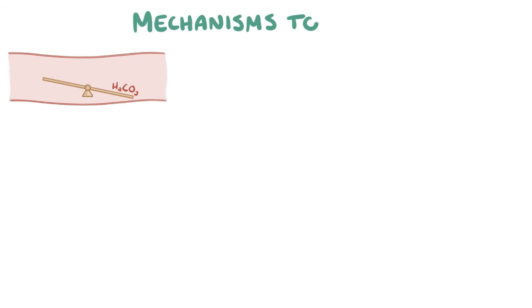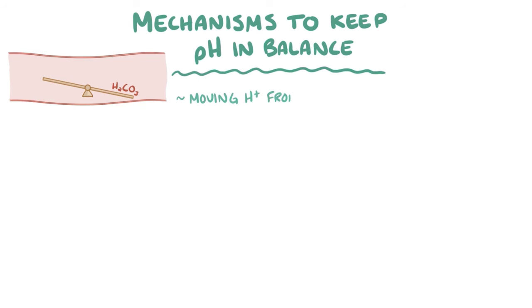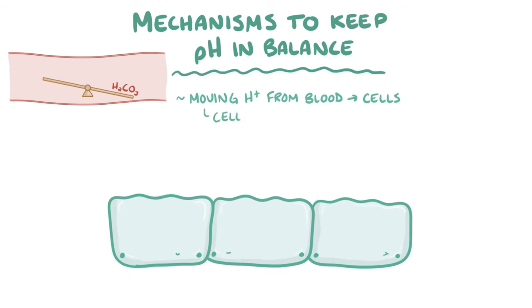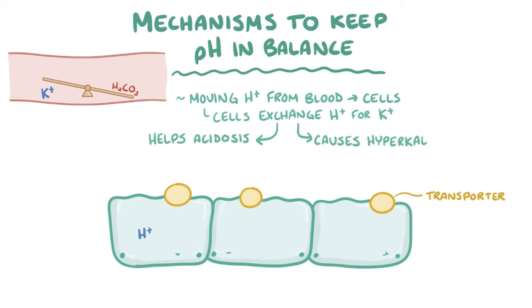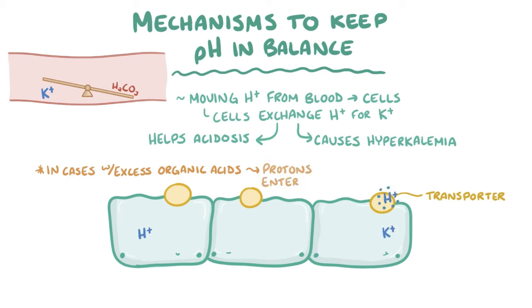If there's a decrease in the bicarbonate concentration in the blood that threatens to decrease blood pH, the body has a number of important mechanisms to help keep the pH in balance. One of them is moving hydrogen ions out of the blood and into cells. To accomplish this, cells usually have to exchange a hydrogen ion for a potassium ion using a special ion transporter located across the cell membrane. So in order to help compensate for an acidosis, hydrogen ions enter cells and potassium ions leave the cells and enter the blood. This might help with the acidosis, but it results in hyperkalemia. In cases of metabolic acidosis from excess organic acids like lactic acid and ketoacids, protons can enter cells with the organic anion rather than having to be exchanged for potassium ions.